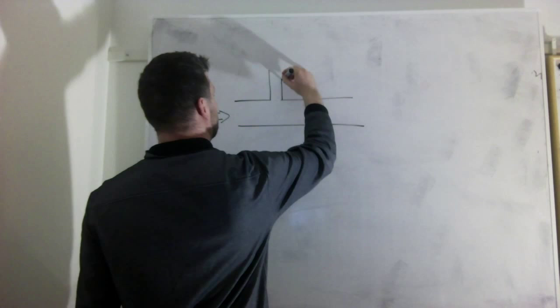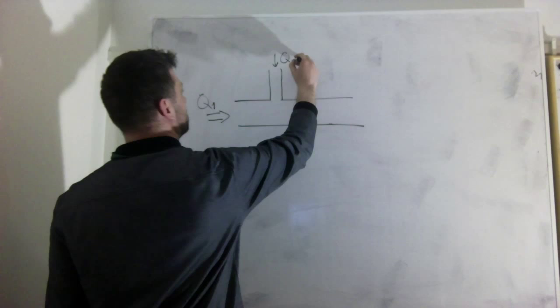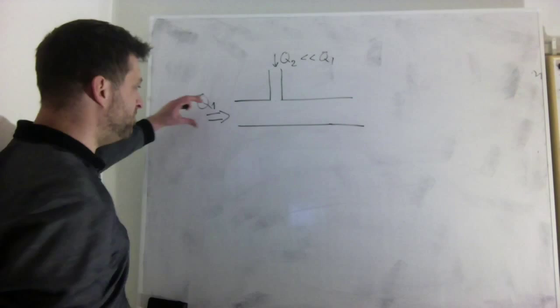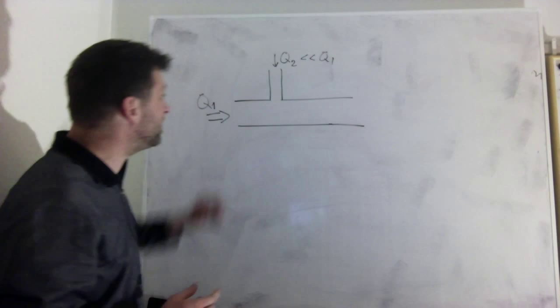Another flow, so I call this Q1 and this Q2 that is much smaller than Q1. So we have a main flow going on and here I have a little flow. And also important, I make sure that the liquid in Q2 and Q1 are not mixable.